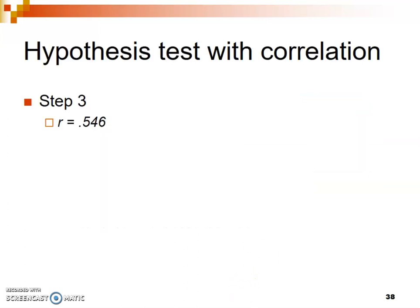We'll add 0.546 into step three. That is our calculated value of R, and the primary goal of step three is to identify what your correlation value is from your data set. As with any other hypothesis test procedure, we take the value calculated in step three and compare it to the criteria established in step two.